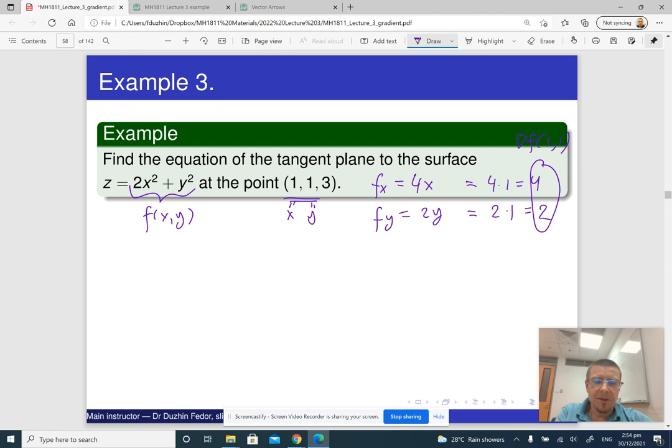Okay, so now, basically, we have all the ingredients. So z equals 3. Sorry, 3 is f(x_0, y_0). Plus 4 times, this 4 is f_x, times x minus x_0. This is 1.